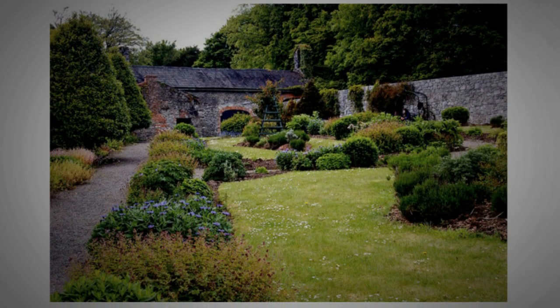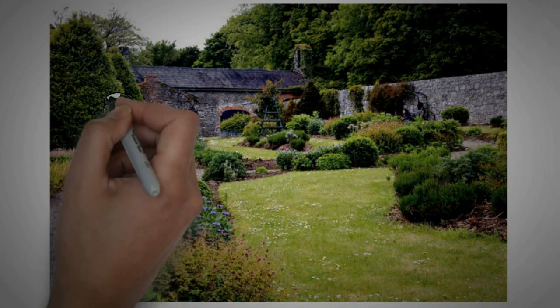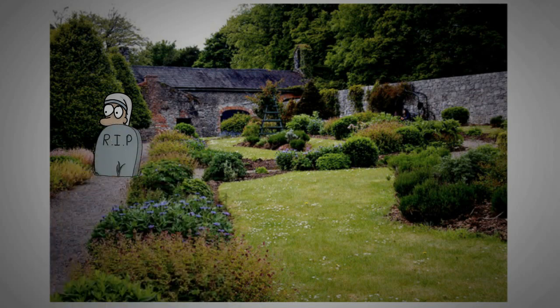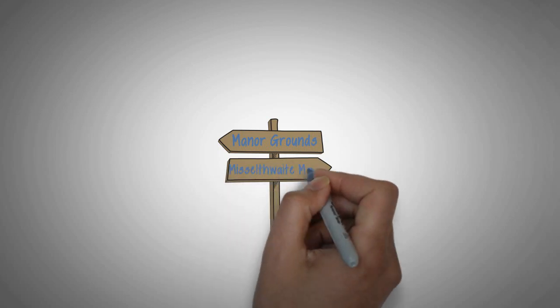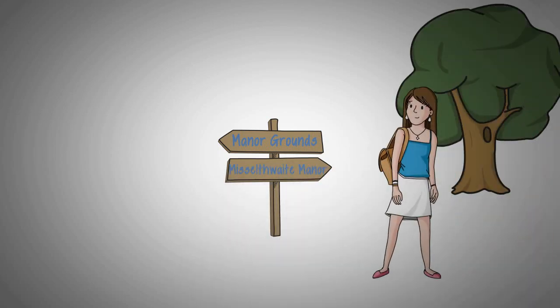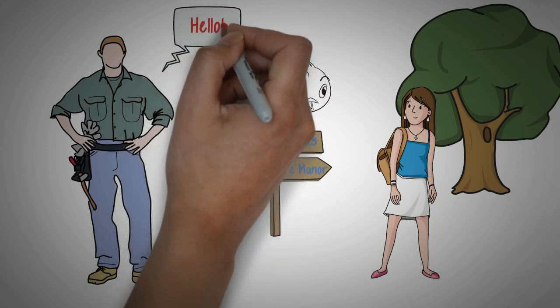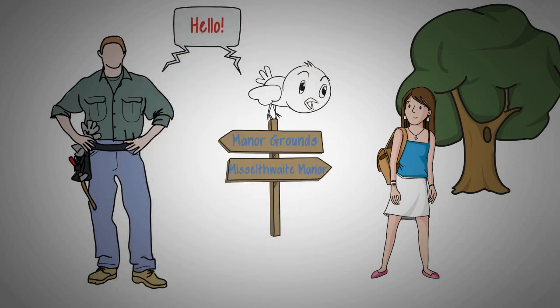Martha says there is a walled garden on the grounds that belonged to Mistress Craven. When she died ten years ago, the master locked the garden door and buried the key. Mary looks for the garden and makes two friends, a singing robin in a tree and an old gardener named Ben. Mary asks him about the secret garden, but he won't answer.